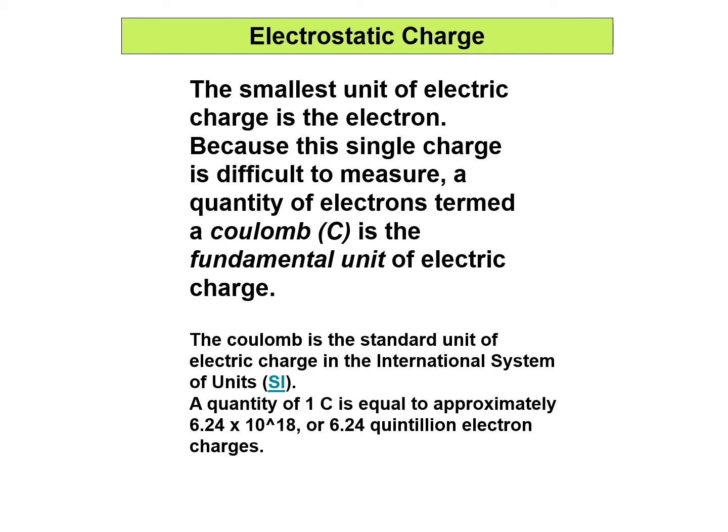The smallest unit of electrostatic charge is the electron. Because a single charge is difficult to measure, a quantity of electrons — termed a coulomb — is the fundamental unit of electric charge. The coulomb is the standard unit of electric charge in the international system of units. One coulomb is equal to approximately 6.24 times 10 to the 18th electrons — that's 6.24 quintillion electron charges — making the coulomb a very large quantity of electrons.